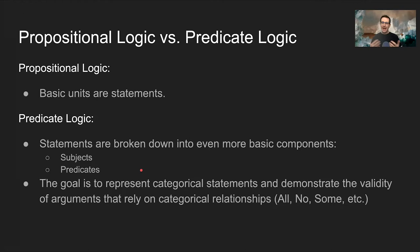By categorical relationships, I mean statements that use words like all, no, or some. A good example would be 'all cats are felines' or 'some mountains are over 14,000 feet tall.' You're basically making a statement about which objects go in which categories, or the relationship between different categories of objects. For some arguments in logic, you need to break down statements into their subjects and predicates to show that those arguments are valid.